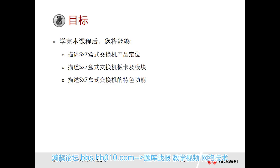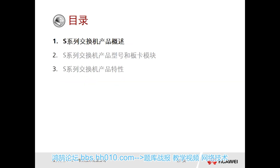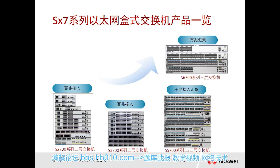First, let's take a look at the product overview. The S-Series switch products can roughly be divided into four categories: S-2700, S-3700, S-5700, and S-6700. From a functionality perspective, the S-2700 — shown in the bottom left corner — is a Layer 2 switch. Simply put, a Layer 2 switch can be configured with VLANs, but cannot run routing protocols.